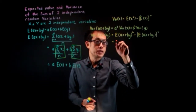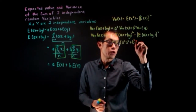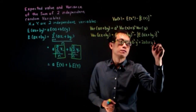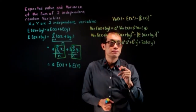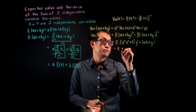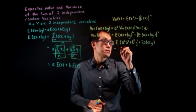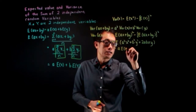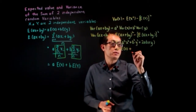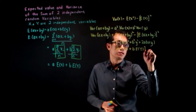Expanding, this will be expected value of a squared X squared plus b squared Y squared plus 2ab times XY. Now for the second term, I can take a out as a times expected value of X, plus b times expected value of Y, then whole thing squared.